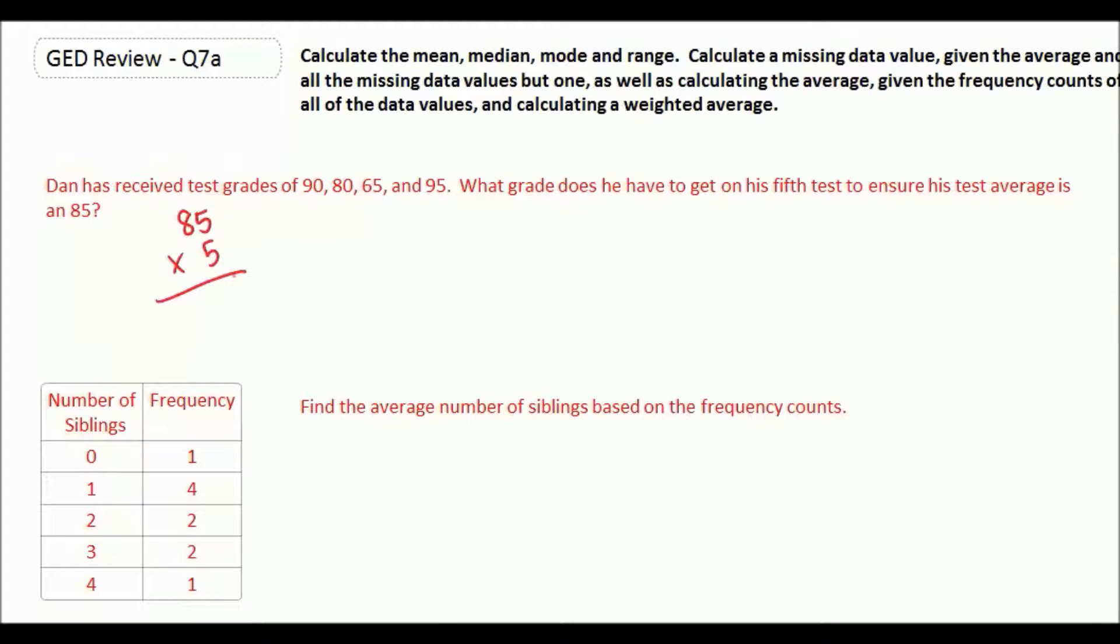5 times 5 is 25, 8 times 5 is 40 plus 2 is 42, so all together his test grades need to add up to 425. Well, let's figure out what he has so far. We're going to add up the ones that we were given.